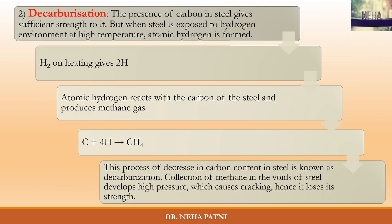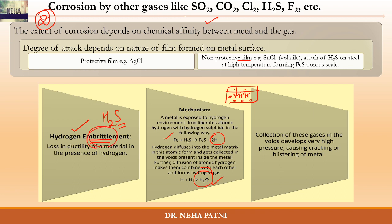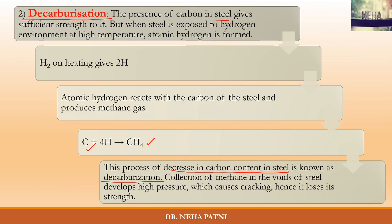The second example is decarbonization. If you take steel and hydrogen gas passes through it, atomic hydrogen reacts with the carbon present in the steel and converts it to methane. Methane is a gas that collects in the voids of the steel, develops pressure, and causes cracking. The carbon content decreases in the steel — that's why it's known as decarbonization. If a steel container has access to hydrogen gas, decarbonization takes place and the material cracks and loses its strength.